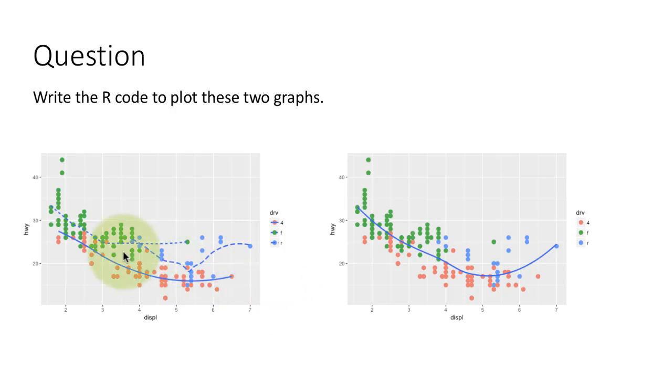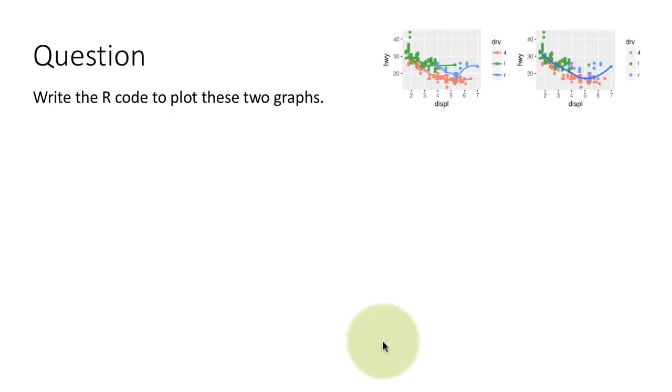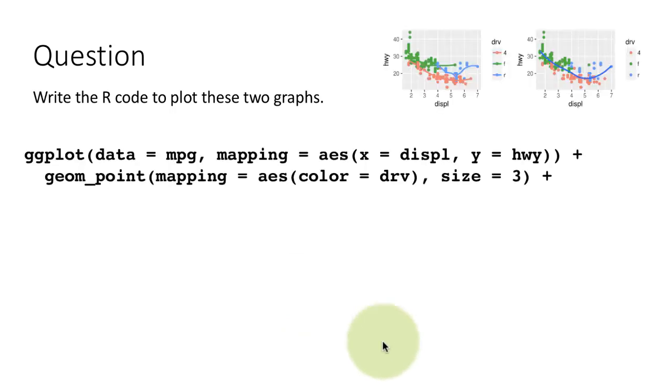Right? Of course, linetype doesn't apply to the point scatterplot layer at all. So, therefore, the result is going to look like this. That's the first one. Because, here, the linetype equals drive, se equals false because there is no gray band. And, here, we set color equals drive, size equals three. Again, you know, the points are bigger than before. So, size equals three.